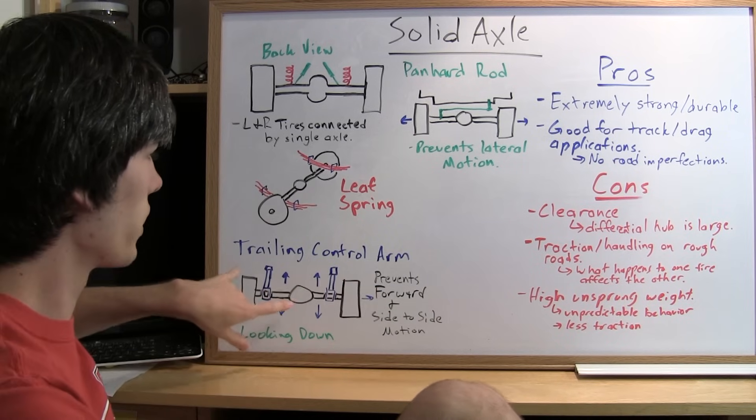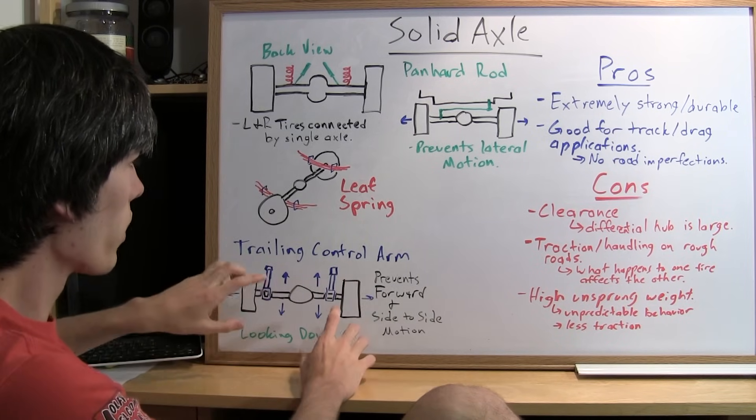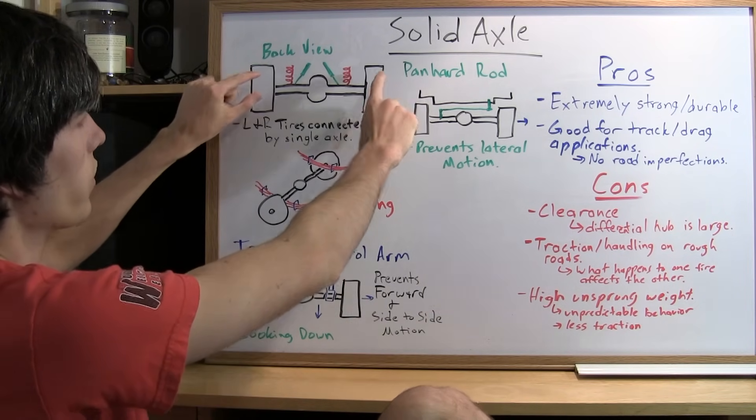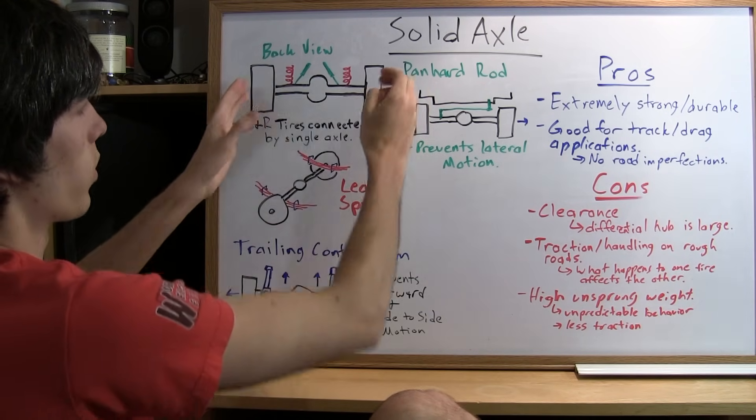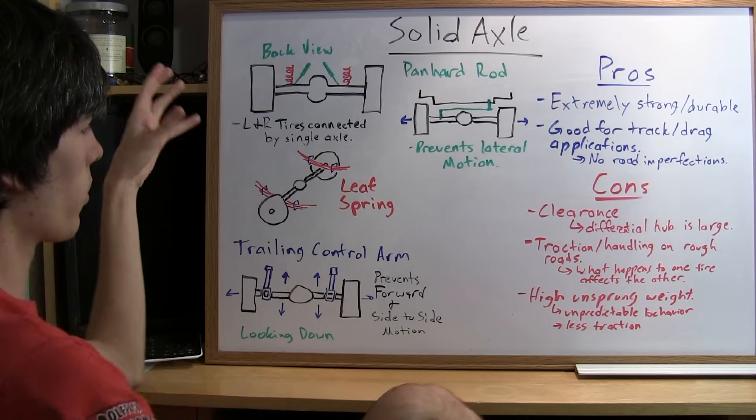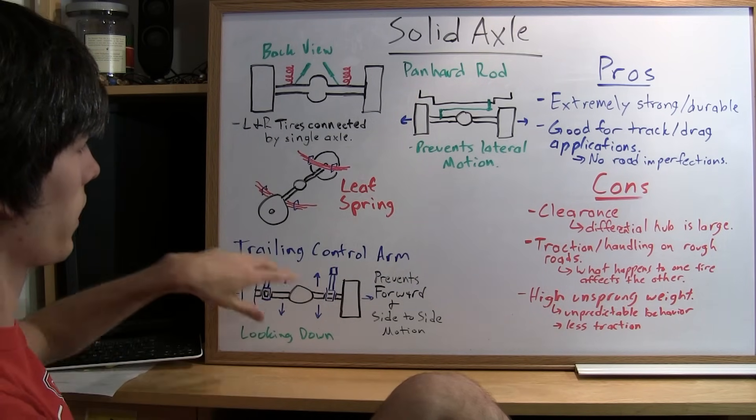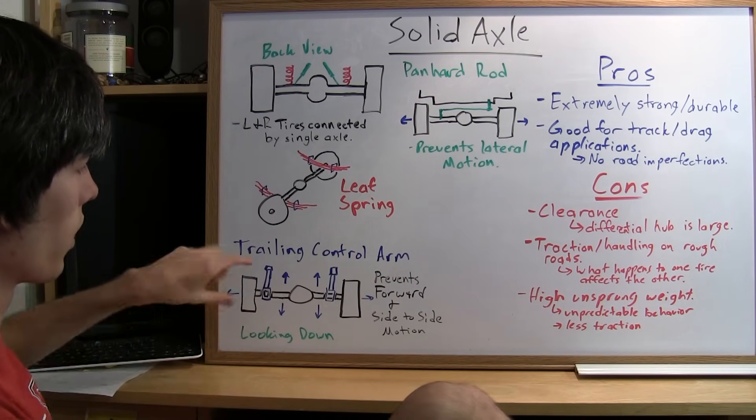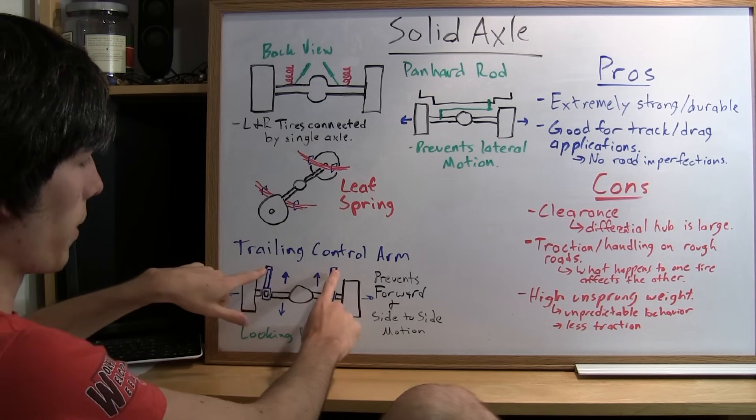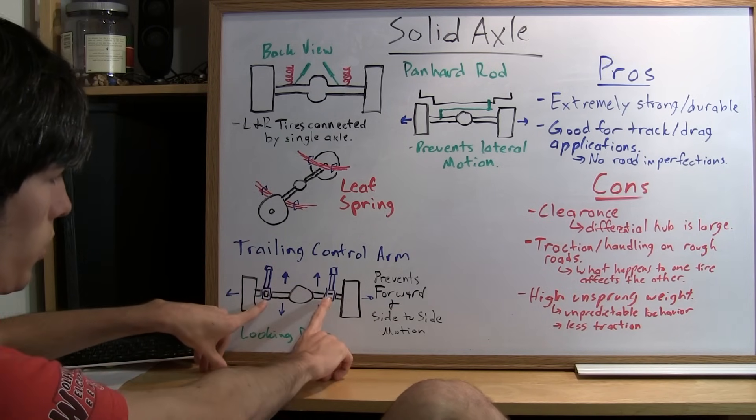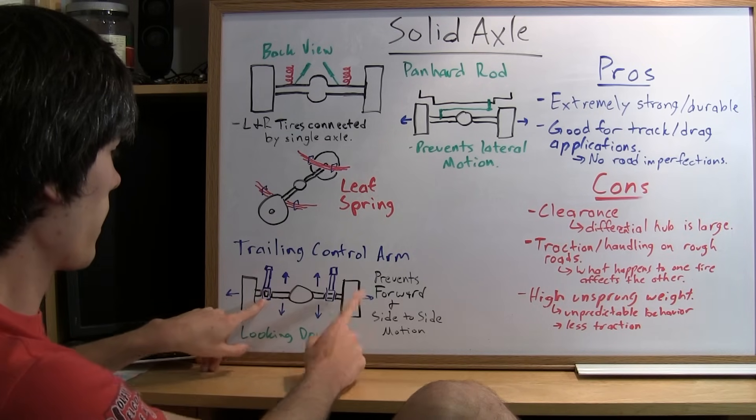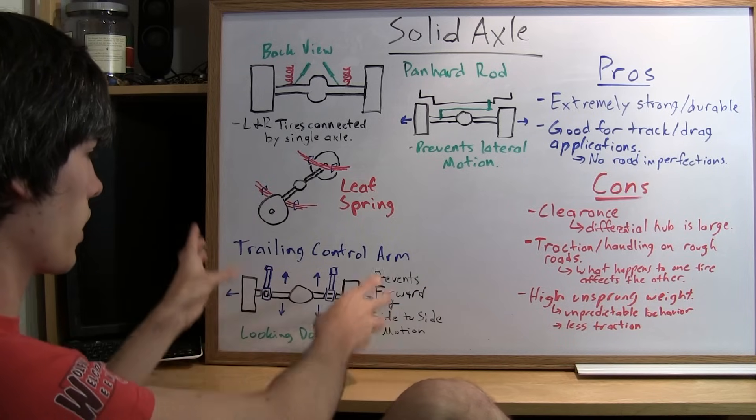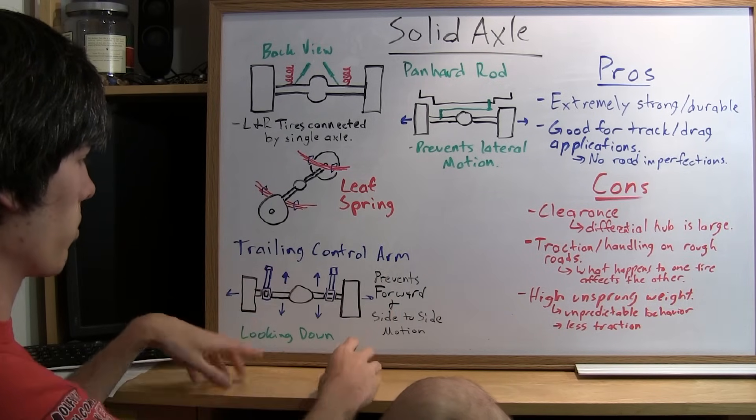Another option is trailing control arms. One of the problems with a solid axle, as you can see here, is there's nothing preventing this axle from moving left to right or forward and backwards. One of the ways that this is prevented is using trailing control arms. These trailing control arms will mount to the chassis and then they'll also connect to the axle.